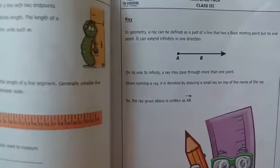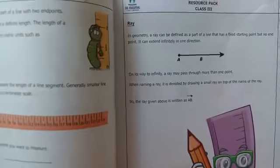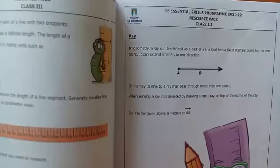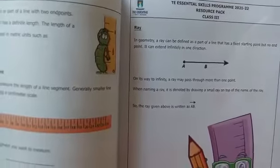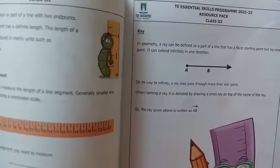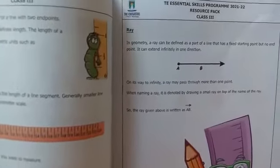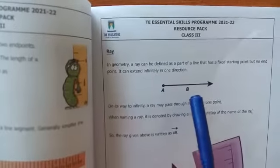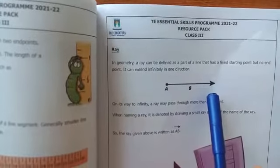Ray - what is ray? The difference between line segment and ray is that a line segment has fixed endpoints, but a ray has only a fixed starting point with no endpoint. It can extend indefinitely in only one direction.